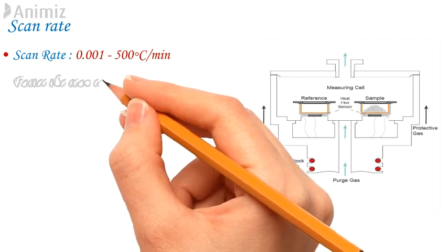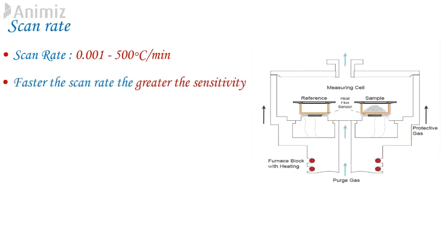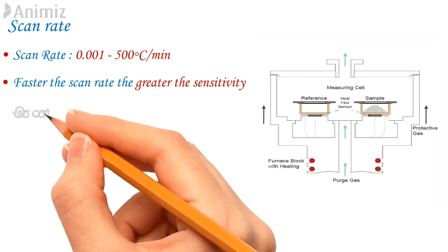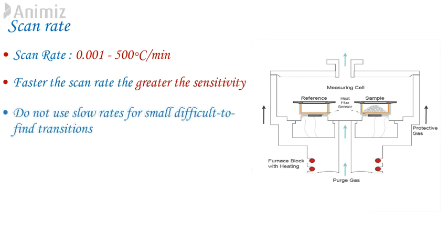1. Sensitivity. Faster the scan rate, greater the sensitivity. The reason for this is that DSC measures flow of energy and during a fast scan the flow of energy increases though over a shorter time period. A slow scan rate means lower flow of energy over a longer time period. But since DSC data are usually shown with X axis as temperature, it simply looks like the transition is bigger at a faster rate. Hence, an increased scan rate leads to increased sensitivity. So, do not use slow rate for small difficult to find transitions unless otherwise unavoidable.